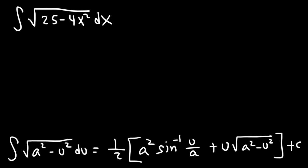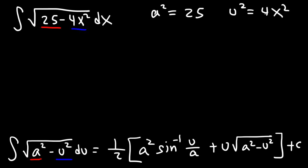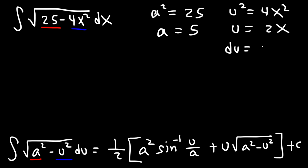First, determine the values of a and u. We can see that 25 corresponds to a squared and 4x squared corresponds to u squared. So a squared is 25, meaning a equals 5, and u equals 2x. Now we need to find du: du is 2dx, so dx equals du over 2. This step is important.